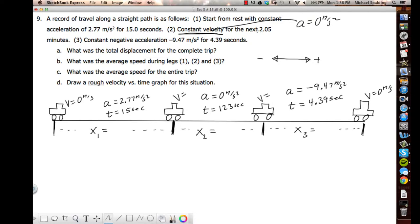And then notice here, 2.05 minutes. What do we have to do to those minutes? Convert them to seconds. Why? Well, everything else is in seconds. See right there, we got seconds, seconds. That's in seconds. So you got to convert the 2.05 minutes to seconds, that works out to be 123 seconds. Then the third part, constant negative acceleration, meaning it's slowing down for 4.39 seconds, and then the car comes to rest.